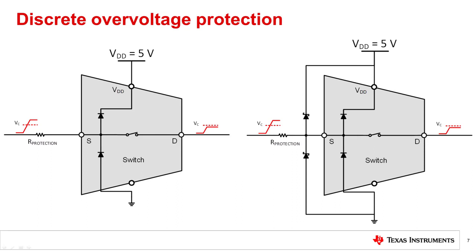If the resistor is too large, the performance of the system may be limited. The figure on the right is an example of a solution with the resistor and Schottky diodes to control the current. While a discrete solution may be a flexible design, potential disadvantages include cost, size, and complexity.